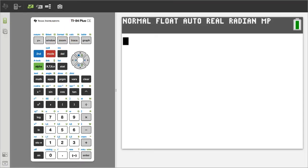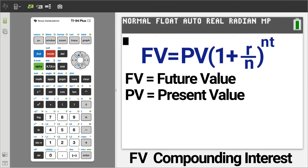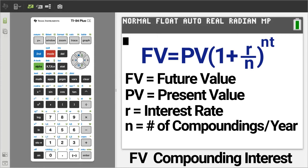Same problem but using the future value compounding interest formula. FV equals PV times (1 plus R divided by N) to the NT power, where FV equals future value, PV equals present value, R equals the interest rate, N is the compounding periods per year, and T is the terms in years.